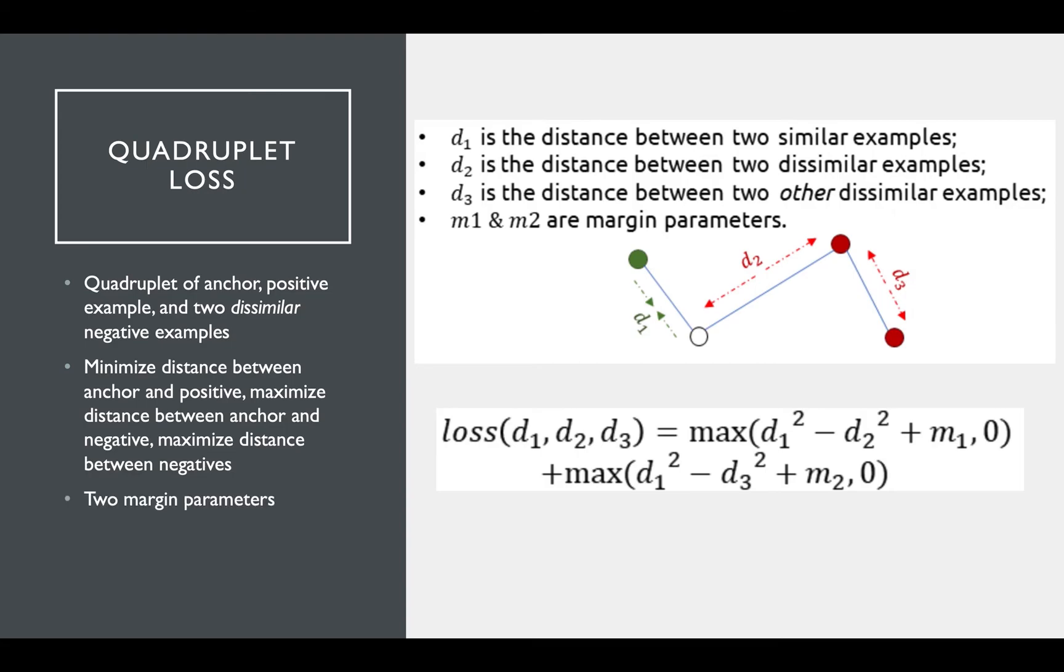One important note with the quadruplet loss is that now there are two different margin hyperparameters, since we have the task of separating the anchor from the first negative and the two negatives, each of which needs its own parameter.